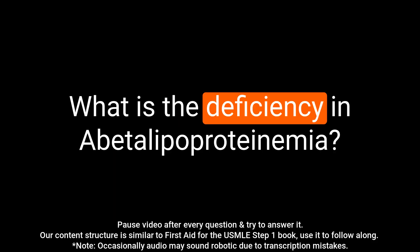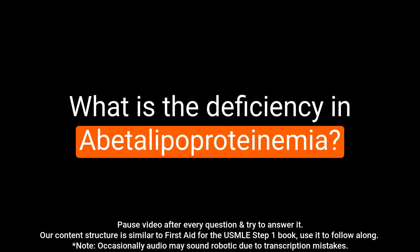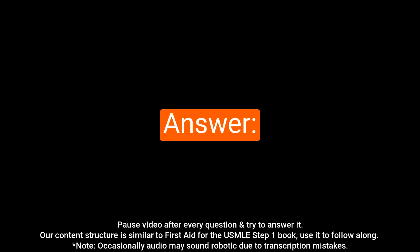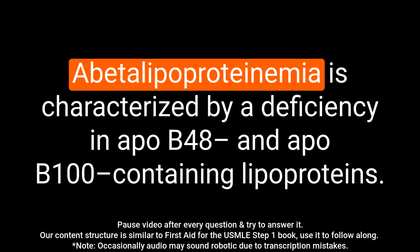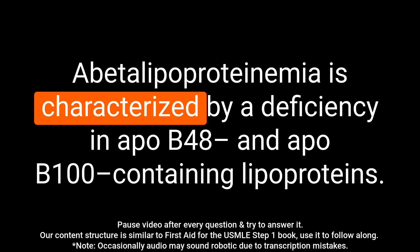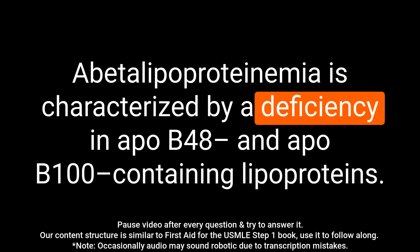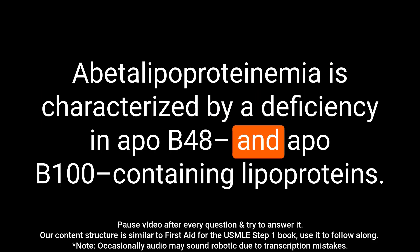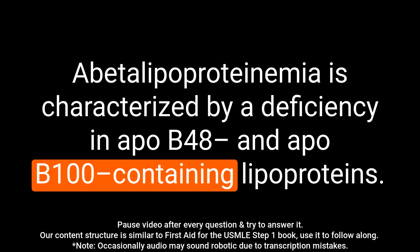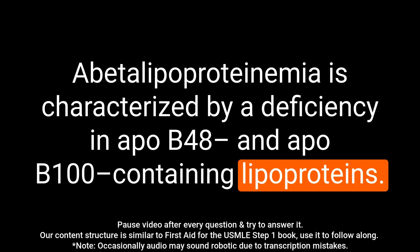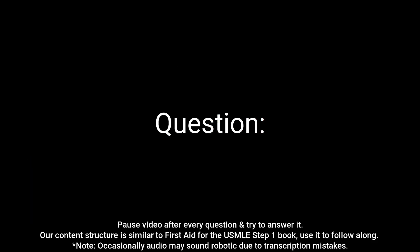Question: What is the deficiency in abetalipoproteinemia? Answer: Abetalipoproteinemia is characterized by a deficiency in apoB48 and apoB100 containing lipoproteins.